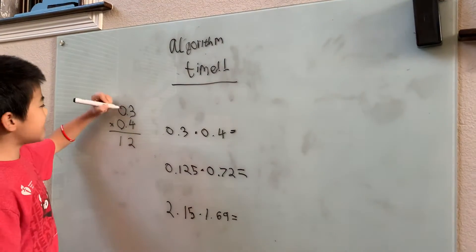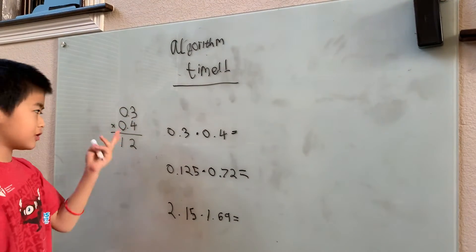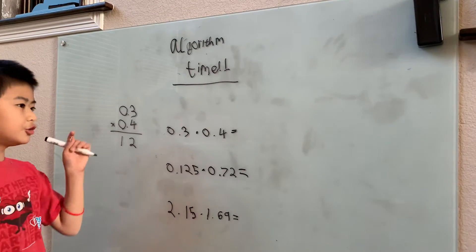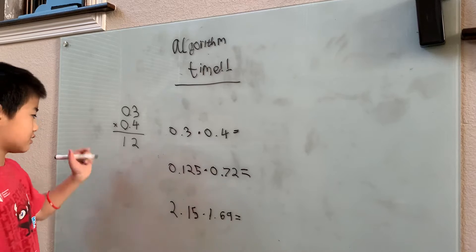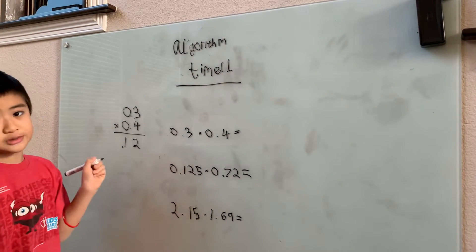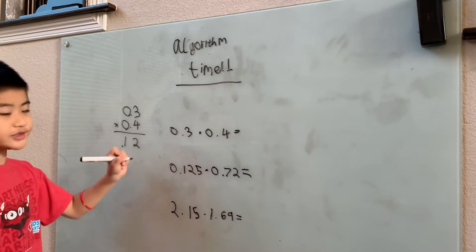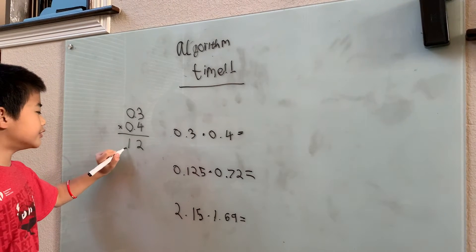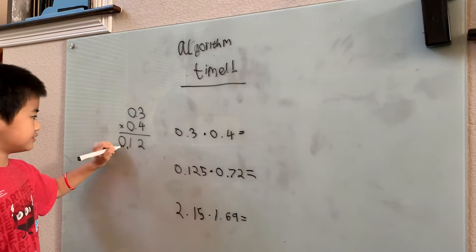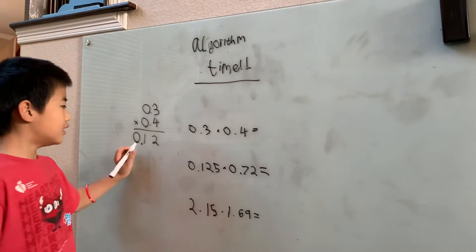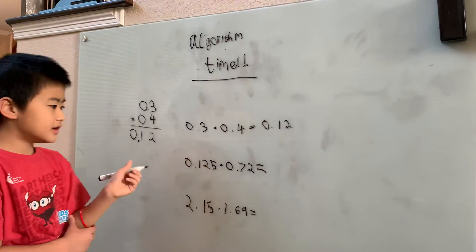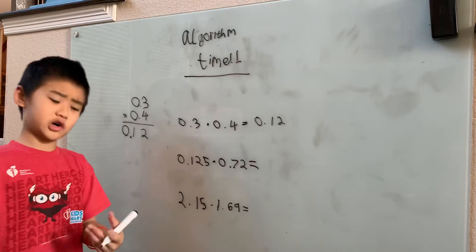All you have to do is count the total number of digits that are after the decimal point. There's one digit after the decimal in 0.3, and one in 0.4 — one plus one is two. So there have to be two digits after the decimal point in our answer. We move the decimal point over two spaces, add a leading zero, and our answer is 0.12.